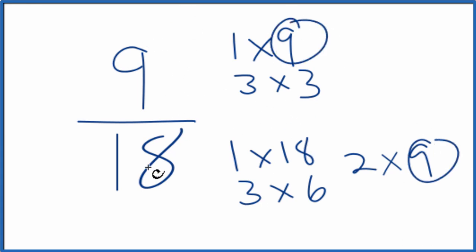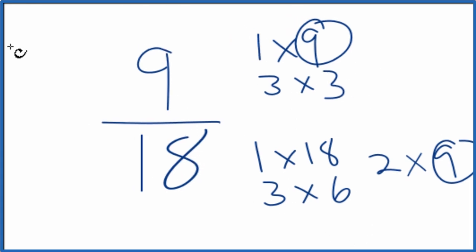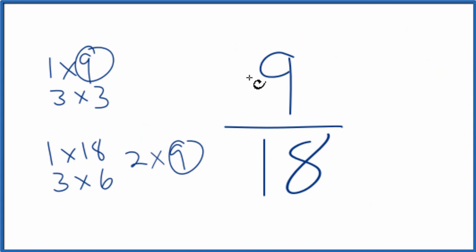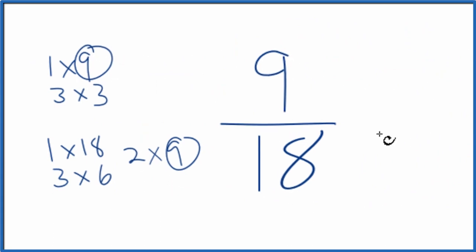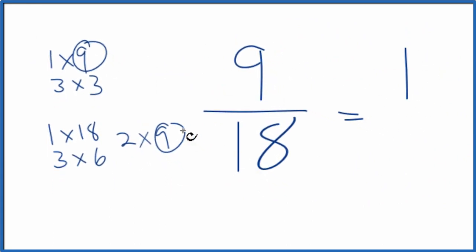So we're going to divide 9 by 9 and then 18 by 9, and we'll have simplified 9 over 18. Let's move these over here. So 9 divided by 9, that equals 1, and 18 divided by 9 equals 2, and we've simplified 9 eighteenths down to 1 half.